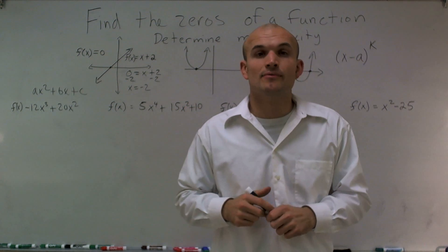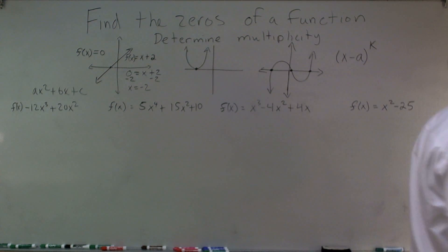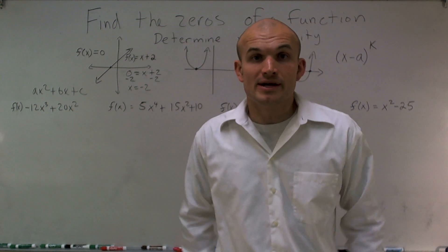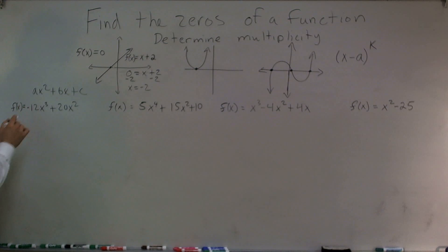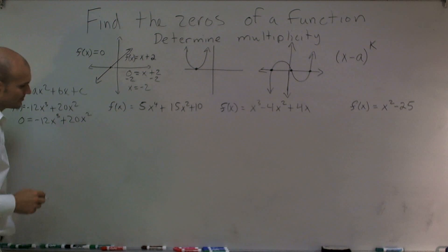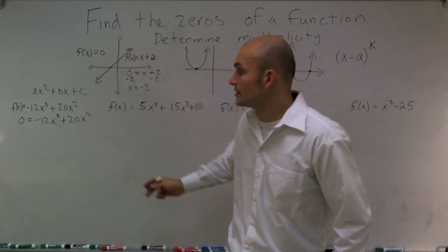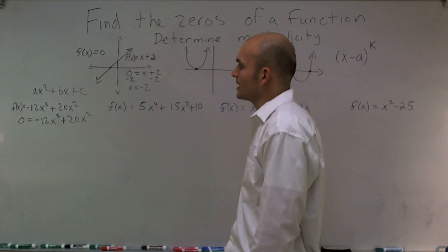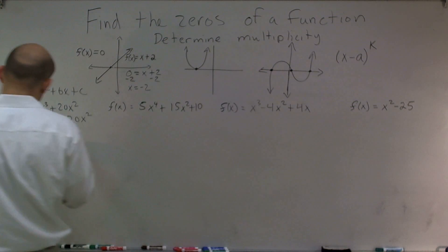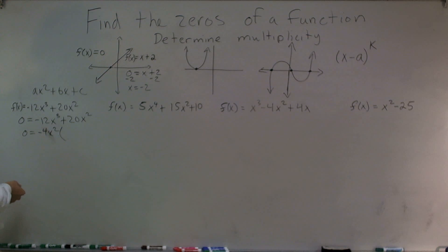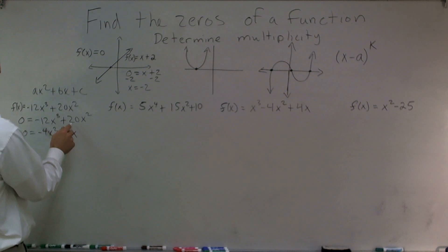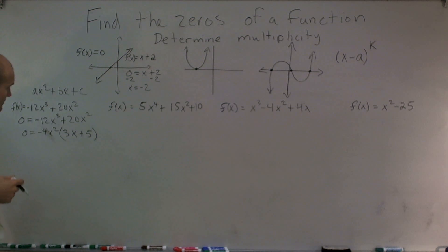Okay ladies and gentlemen, please write down these problems, and I'll give you about 15 minutes, then I'll come back and show you the answers. Let's jump into it. The first thing we always want to do is set our f of x equal to 0. So I say 0 equals negative 12x cubed plus 20x squared. Then we want to factor out what all of our terms share. These are both even numbers, so I can factor out negative 4 and x squared.